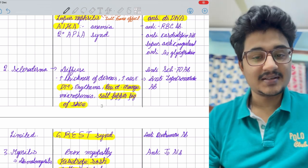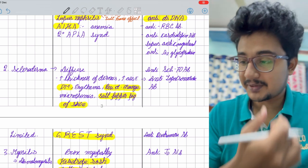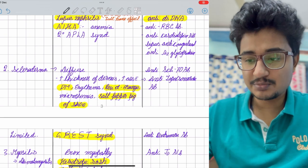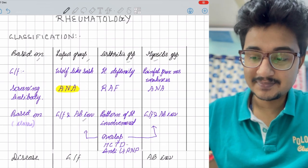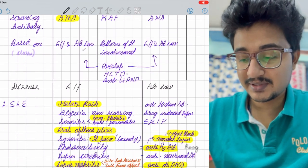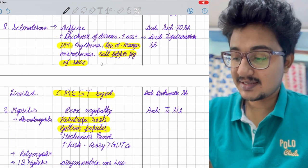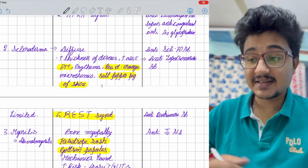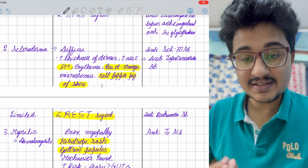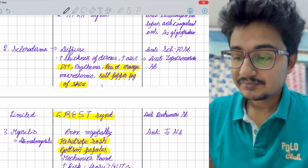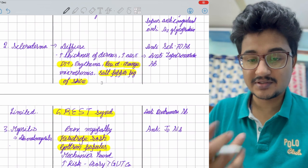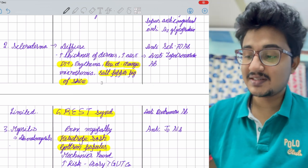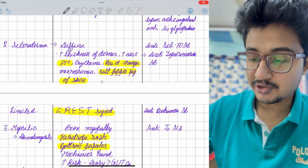In scleroderma, the main antibody is ANA, which is most common. But most specific is anti-Scl70. Specific for diffuse type is anti-topoisomerase. Limited cutaneous is CREST syndrome, and for CREST syndrome, C for C, anti-centromere antibody.